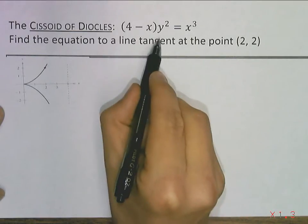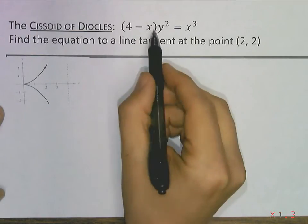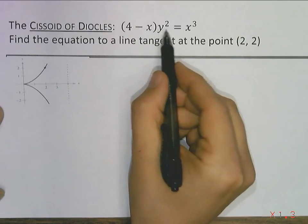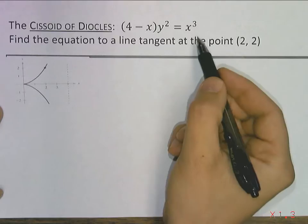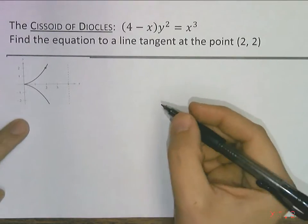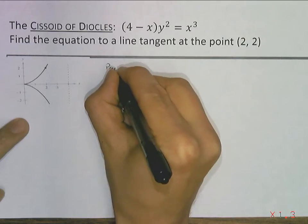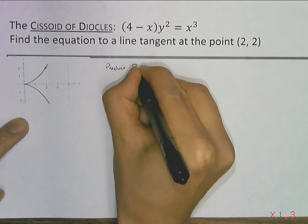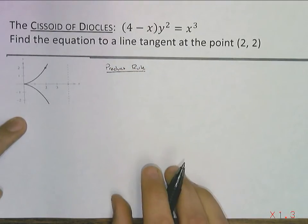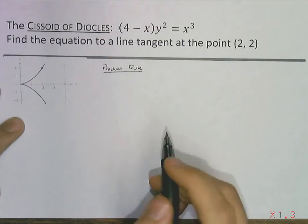So, we can leave it as is and use the product rule right off the bat. We've got this product of a function of x times a function of y and then we've got a function of x over on this side. So, there's a few options algebraically. If we think about the product rule, we can do that first. Product rule.